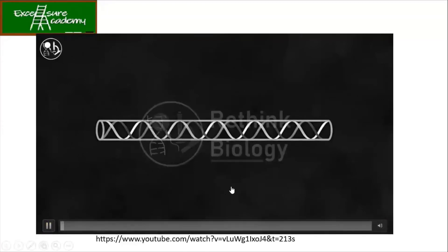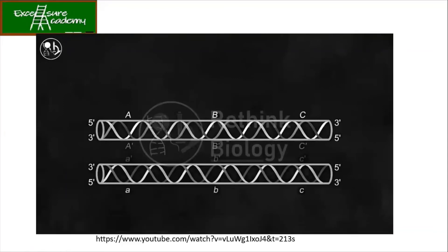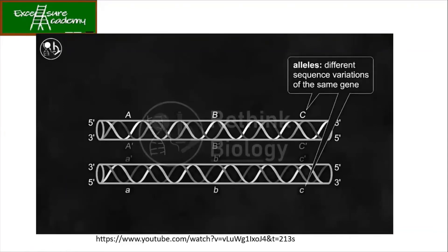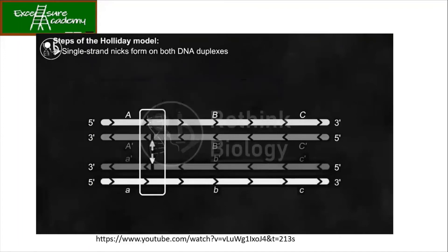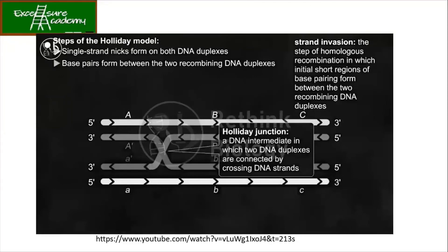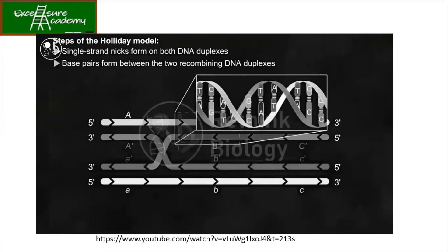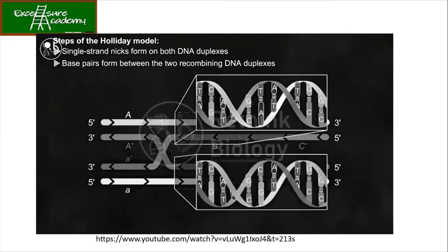The video begins: Explaining homologous recombination using the Holliday model. We start with two homologous double-stranded DNA molecules aligned with each other, which have different alleles of the same gene. In the Holliday model, single-stranded nicks are first formed at the same position on both DNA duplexes. Then strand invasion occurs — initial short regions of base pairing form between the two recombining DNA duplexes near the nicks, and the Holliday junction is formed.